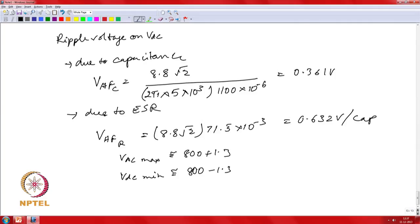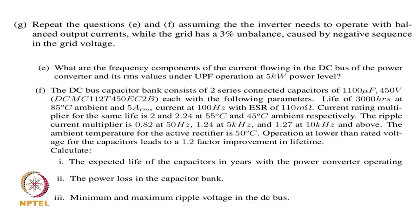The next problem repeats this analysis for the case where the grid has a 3 percent unbalance caused by a negative sequence component in the grid voltage. The first step is to evaluate what this negative sequence voltage is, find the resulting ABC voltages, and use those to evaluate the duty cycles.